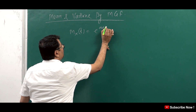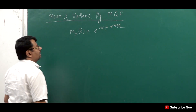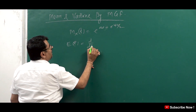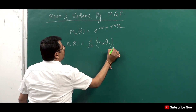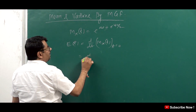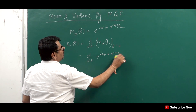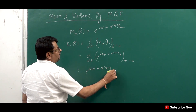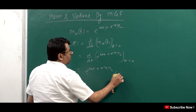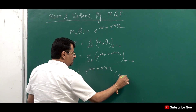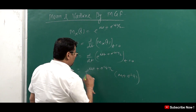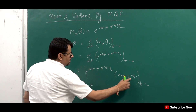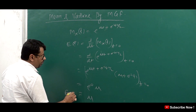To find the mean, we use the formula E[X] equals d by dt of M_X(t) evaluated at t equals 0. Differentiating e to the power mu t plus sigma squared t squared upon 2 with respect to t gives e to the power mu t plus sigma squared t squared upon 2, times (mu plus sigma squared t). Substituting t equals 0: e to the power 0 equals 1, and sigma squared times 0 equals 0, so the mean equals mu.